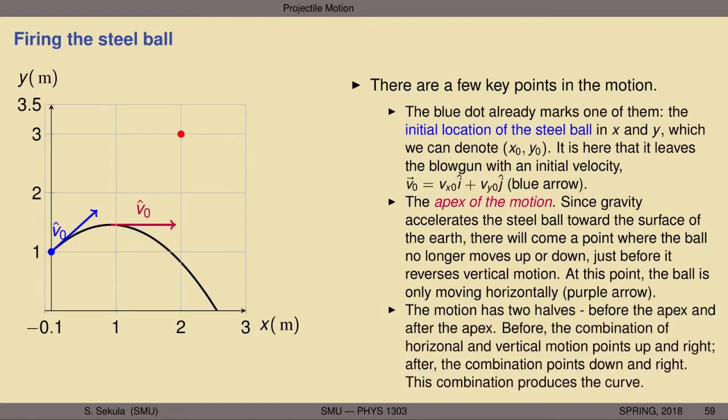The motion has two halves — before and after the apex. Before the apex, the combination of horizontal and vertical motion points up and to the right. After the apex, it points down and to the right. This combination ultimately produces the curve, whose mathematical shape is a parabola.